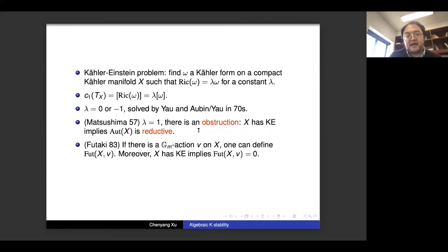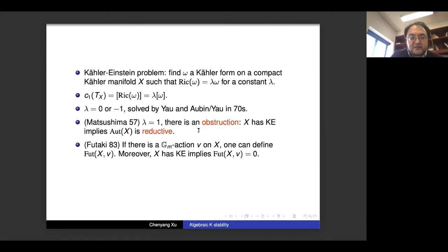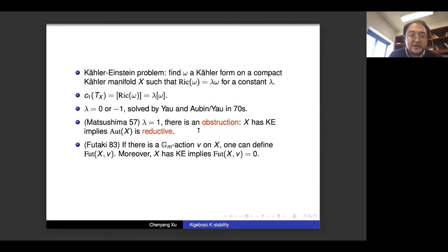Even in the 50s, Matsushima already found an obstruction: if X has a Kähler-Einstein metric, the automorphism group of X must be reductive. This is not an empty assumption on Fano varieties, as we all know. A more sophisticated obstruction was found by Futaki in the 80s: he considered the case that X has a C* action, defined an invariant now called the Futaki invariant, and showed that the existence of a Kähler-Einstein metric implies this invariant must be zero.